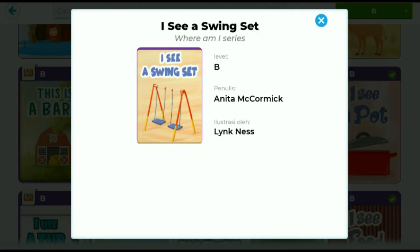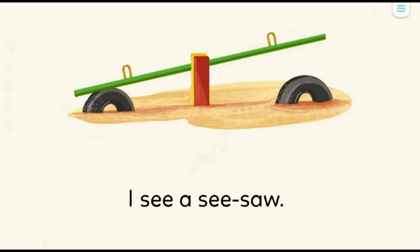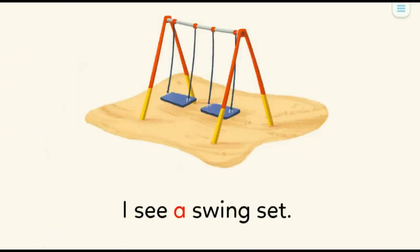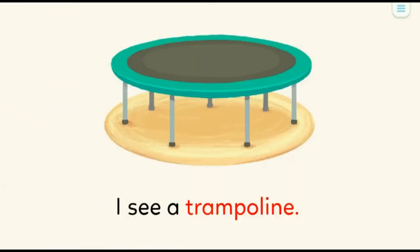Where Am I? Series, written by Anita McCormick, illustrated by Link Ness. I see a seesaw. Seesaw. I see a swing set. Swing set. I see a slide. Slide. I see a trampoline.